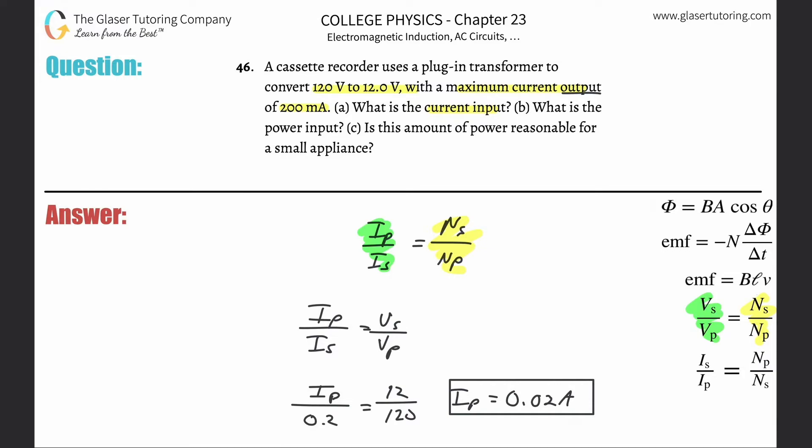What is the power input? Okay. So power, right? Remember PIV. Power is equal to current multiplied by the voltage. So if I'm finding the power, what is the power input? So input means primary. So if I want to know the primary power, then I need to know the primary current, I need to know the primary voltage.